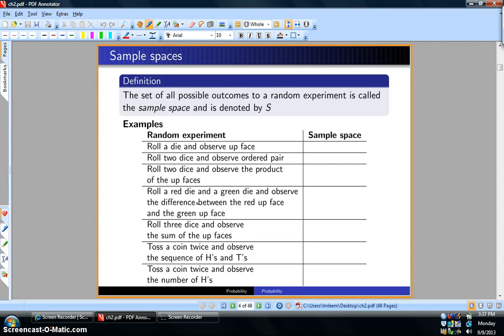The set of all possible outcomes to a random experiment is called the sample space and is denoted by the letter capital S.